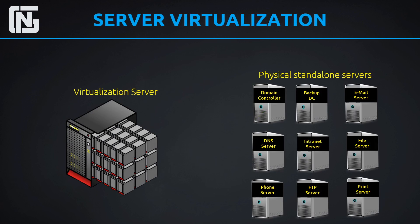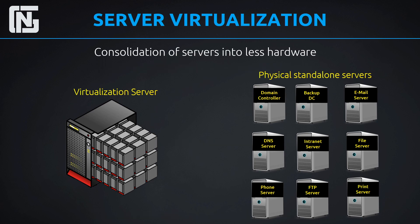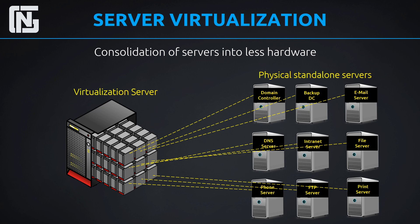The first use case is server virtualization. This is the main thing people think about when they think of virtualization in IT. You might have a data center or IT room with all these physical standalone servers — a domain controller, backup domain controller, email server, and so on. To consolidate those, we can get one virtualization server or a cluster of servers and consolidate all of those physical standalone servers into one or fewer pieces of hardware as virtual machines. That's called physical-to-virtual migration — migrating all of our physical servers into a virtualized environment.